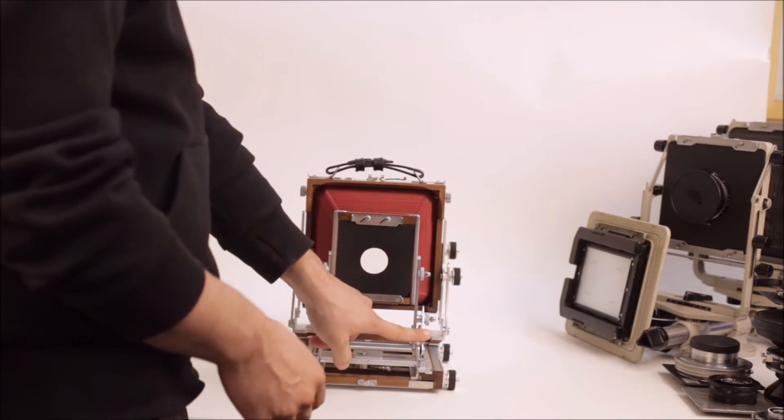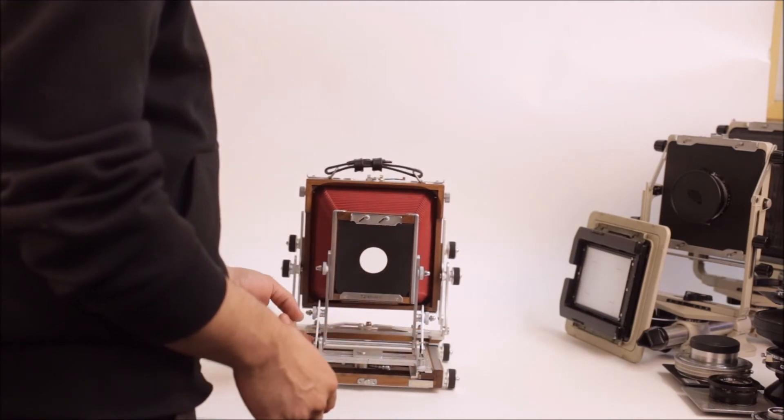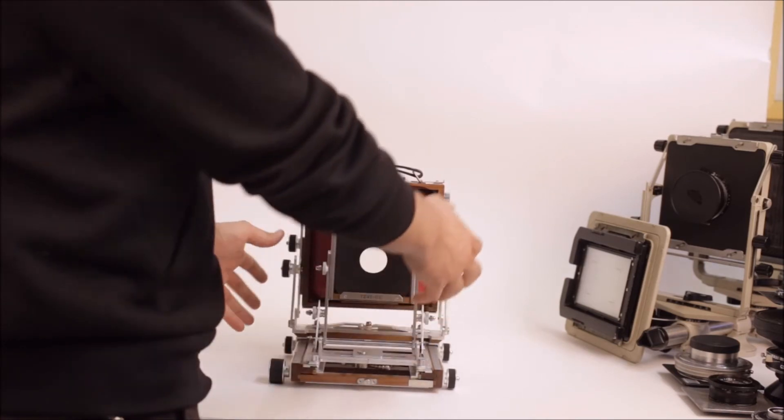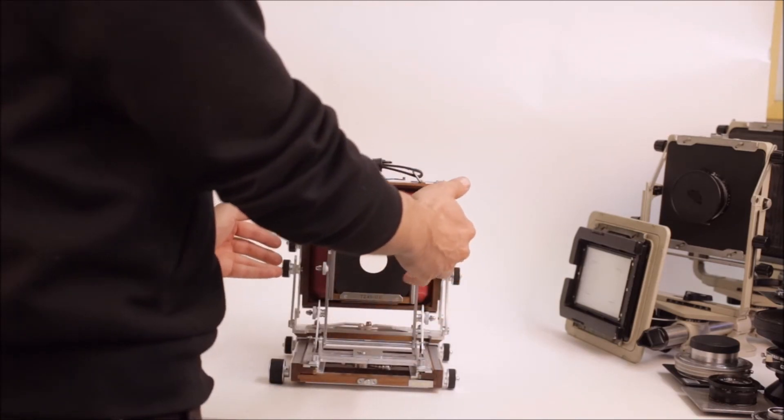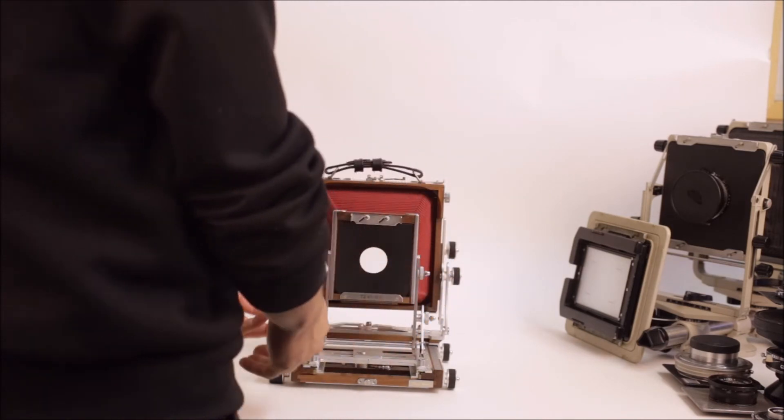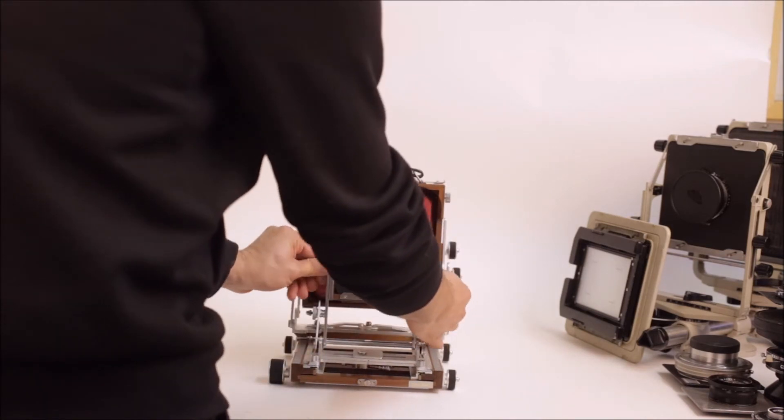The front struts have an auto-lock spring, which kind of lock it into place. The rear doesn't, so you do have to pull the struts in or out to move the camera off.